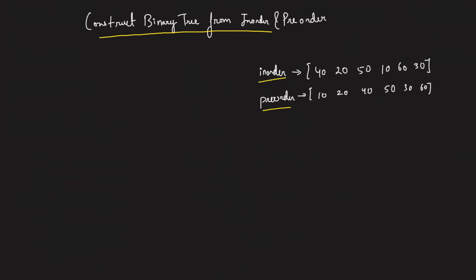Since you're given both traversals, you need to figure out which tree satisfies this in-order and pre-order. For example, if I draw a tree with nodes 10, 20, 30, 40, 50, and 60, the in-order traversal and pre-order traversal can be written out. If you don't know in-order and pre-order traversal, check out my previous video. In the previous video, we saw we cannot form any other tree because the in-order is unique if a pre-order is given. So the question is: you'll be given in-order and pre-order, and you need to return the root of the tree that satisfies both.